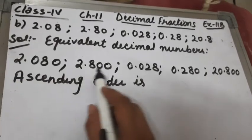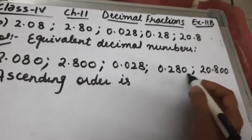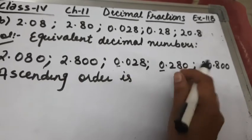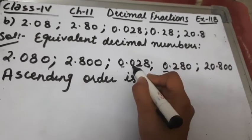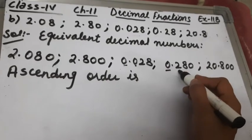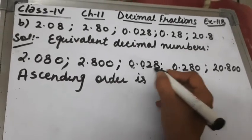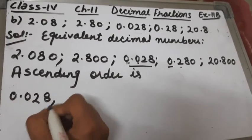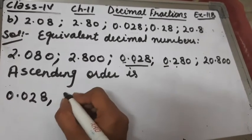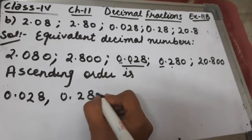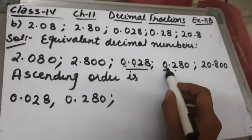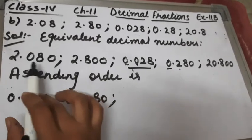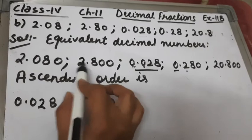Now for ascending order, we check the smallest ones place, which is 0. Both 0.028 and 0.280 have 0 in the ones place, so we compare the tenths place. In 0.028 the tenths place is 0, and in 0.280 the tenths place is 2, so 0.028 is the smallest and comes first, followed by 0.280. The next ones-place digit greater than 0 is 2, so we compare 2.080 and 2.800.